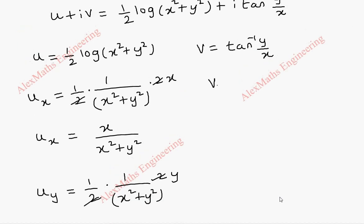Coming to the v, let's find v_x. Tan inverse x derivative is 1 by 1 plus y by x whole square. Again, by chain rule, derivative of y by x, y is constant and 1 by x derivative is minus 1 by x square. So, y is written as it is and 1 by x is minus 1 by x square. Now, we have to take LCM and simplify this further.